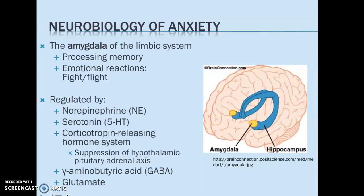This is regulated by a number of different neurotransmitters. We have norepinephrine, serotonin, and we also have the corticotropin-releasing hormone system. You may recall that system through the mechanism of the hypothalamic-pituitary-adrenal axis that we talked about when we went over the emotion section of this course — that same system causing stress hormone to get released and contributing to the experiencing of anxiety.